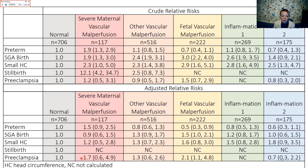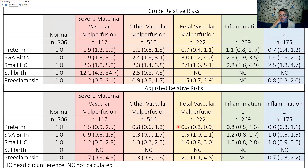Interestingly, for preeclampsia, associations actually became stronger upon adjustment. This appears partly explained by the fact that some risk factors for preeclampsia — like obesity and not smoking during pregnancy — were more common in the normal cluster. We were also surprised that the fetal vascular malperfusion cluster and Inflammation 2 showed lower risk of preterm birth compared to the normal group. This likely highlights that this is a statistical grouping procedure and not a clinical definition — these findings may be due to chance or an artifact of this highly data-driven method in this particular dataset.